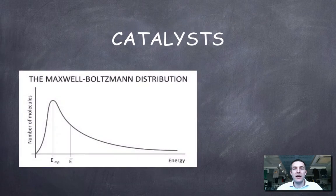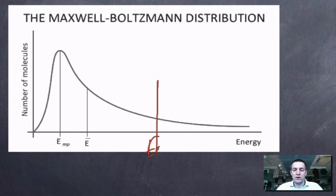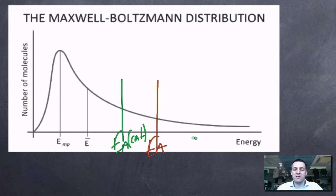We can represent that on our energy distribution. The symbols for most probable energy and root mean square energy are shown for reference — these aren't going to be tested, so don't worry too much. If I have an activation energy without a catalyst marked here, I can compare that to the lower activation energy when a catalyst is used — I'll label that EA_cat. In an exam, I don't need to put precise values on the axis; I just need to show that the activation energy with a catalyst is lower than without.